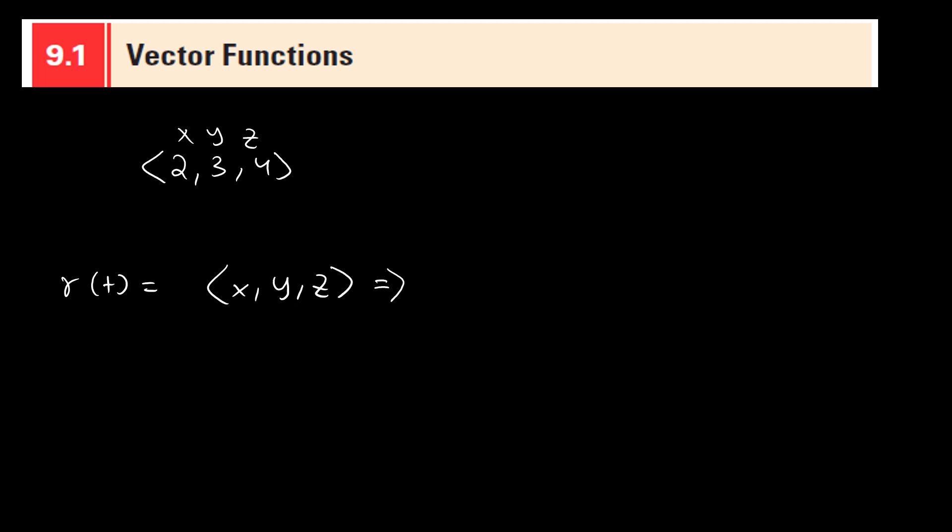The x component, for example, is going to be a function of t, so f(t), and here let's say g(t) and h(t). So it's going to look like f(t), g(t), and h(t).